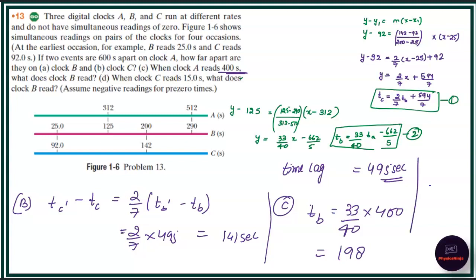Similarly with part D also. In part D, clock C reads 15 seconds. So what we are doing: 15 equals 2/7 times TB plus 594. So when you solve this particular part, you will get the value for TB equals 425 seconds. So we see that clock B reads minus 425 seconds when clock C reads 15 seconds. So I hope you understand the process of this particular question. Thank you for watching this video.